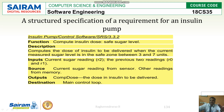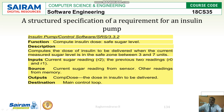For the structured way of representation, an example is the insulin pump control software SRS — System Requirements Specification. The version is given, and the function is 'compute insulin dose,' which is a function for safe sugar level. The description is to compute the dose of insulin to be delivered when the current measured sugar level is in the safe zone between 3 and 7 units.